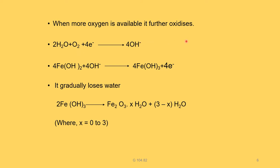To summarize the mechanism: iron atoms lose electrons to form Fe²⁺ ions, which ultimately react to form ferric hydroxide. This ferric hydroxide gradually loses water molecules and forms rust on the iron — formula Fe₂O₃·xH₂O.